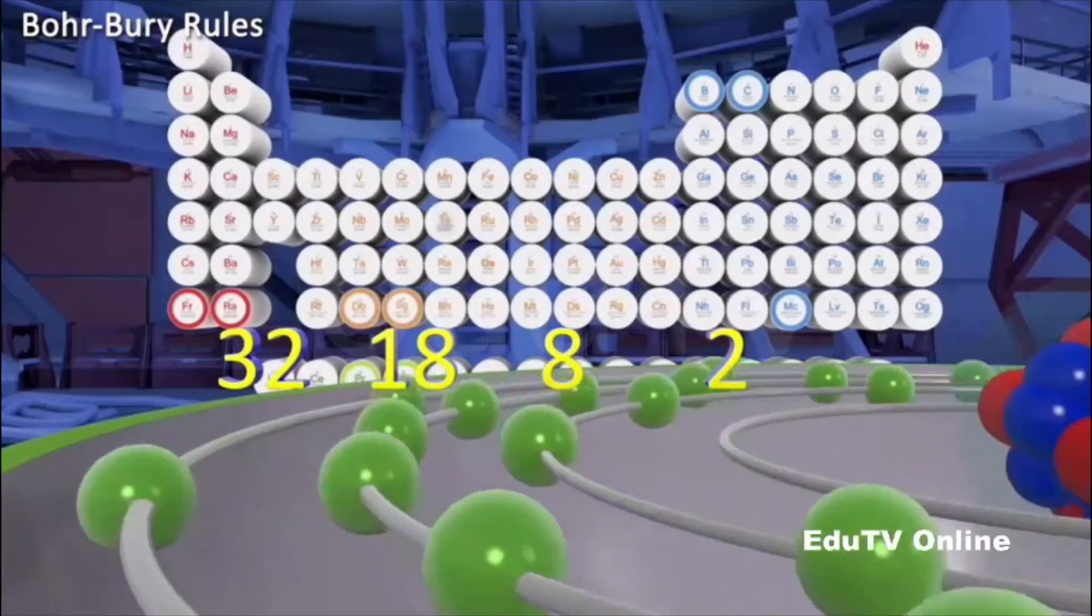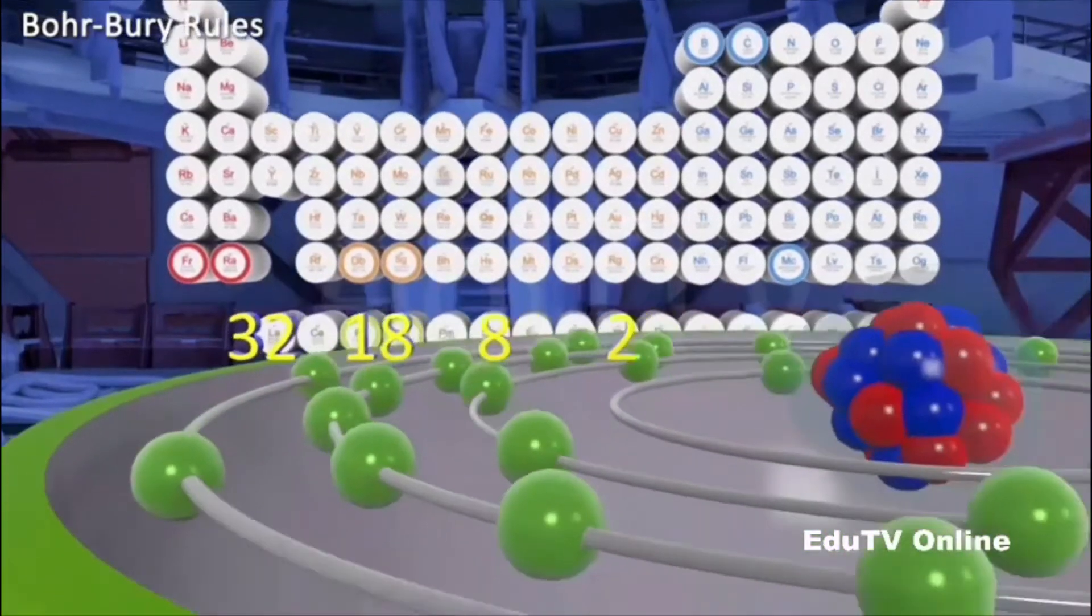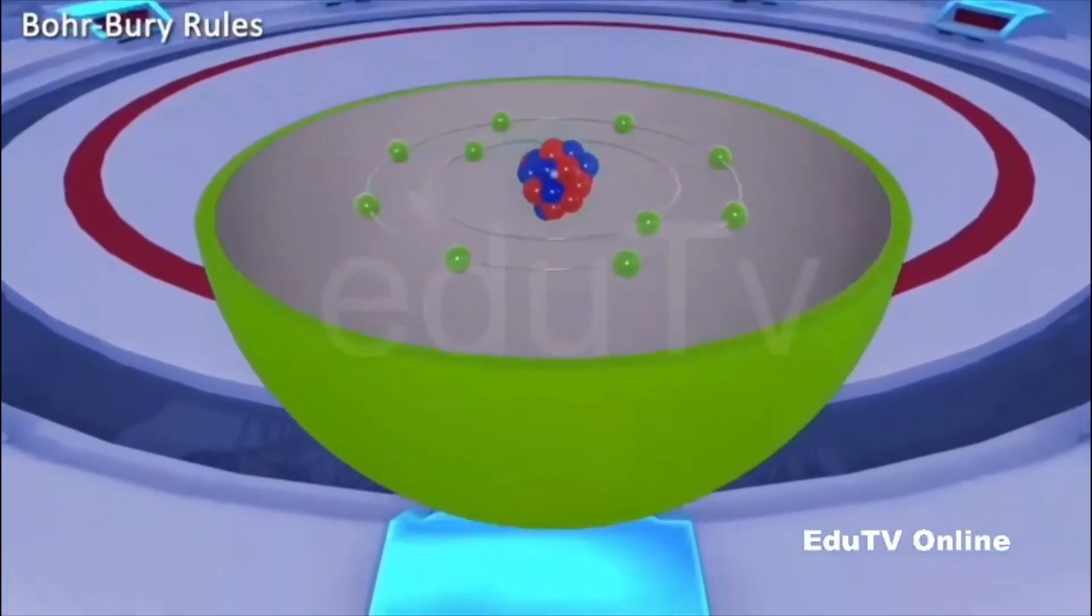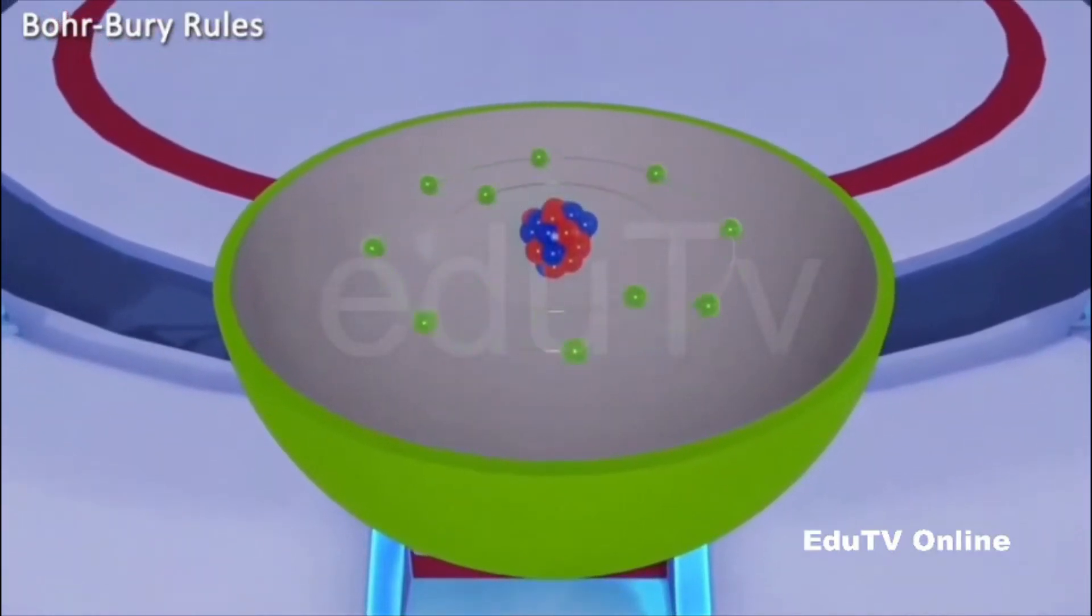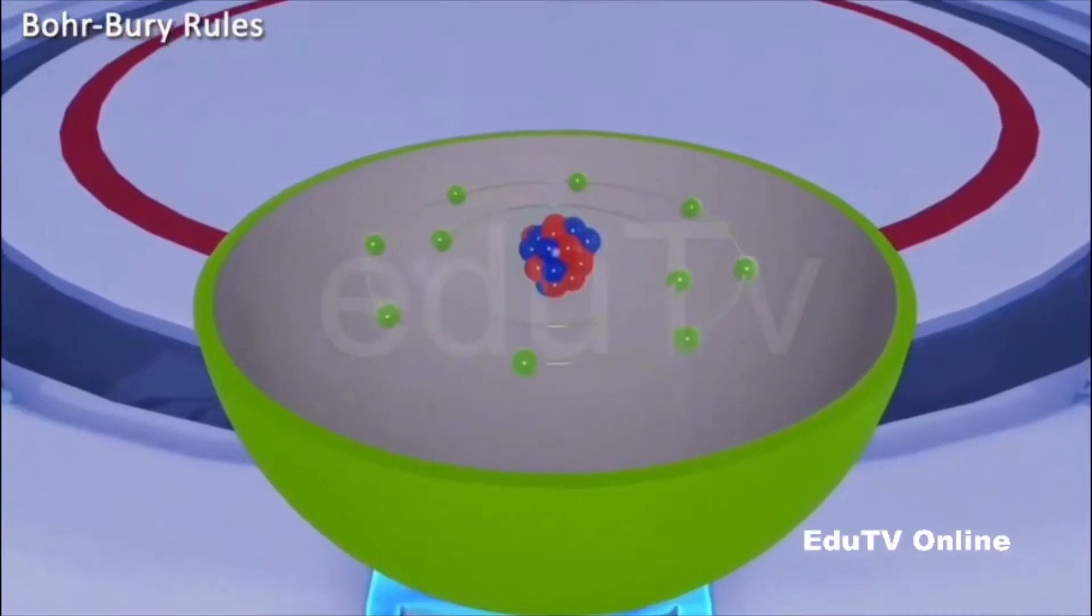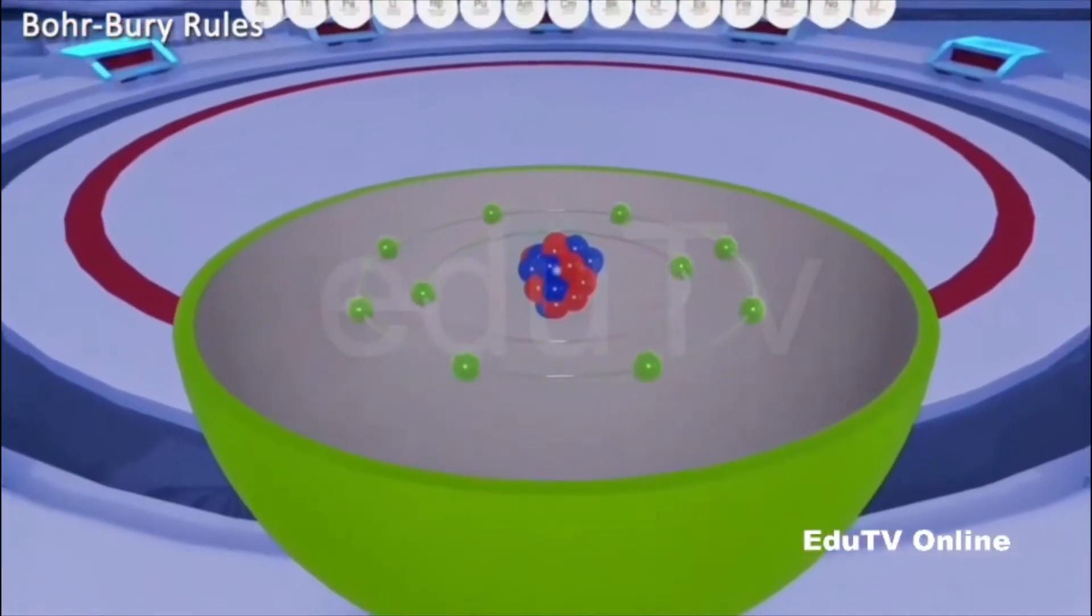Rule 2: The outermost shell of an atom cannot contain more than 8 electrons in any case. A new shell is formed as soon as the outermost shell is filled with 8 electrons.